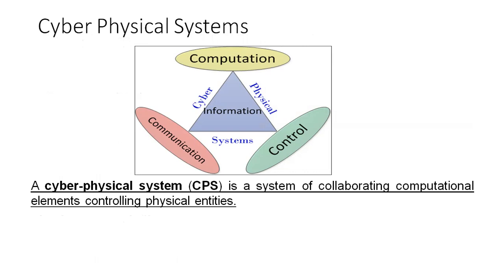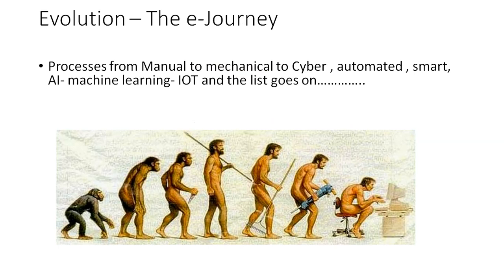The cyber-physical world is where communication, control, computation, information flow, and physical things are all connected — the cyber-physical system. Industry 4.0 is a cyber-physical system of collaborating computational elements controlling physical entities. The evolution journey goes from manual to mechanical to automated — smart AI, machine learning, and IoT — representing how we have moved toward this new technological era.